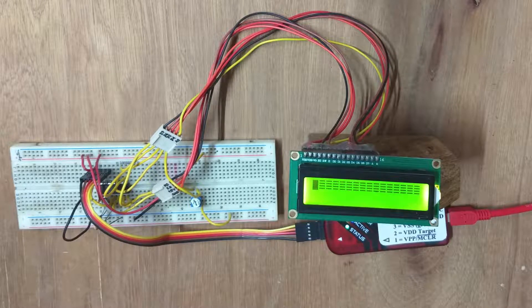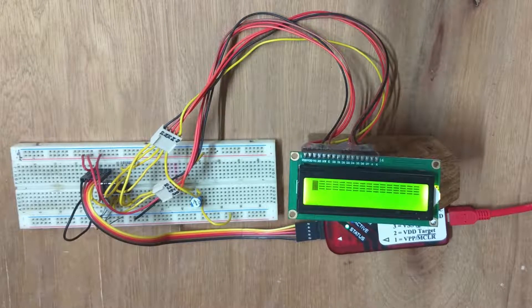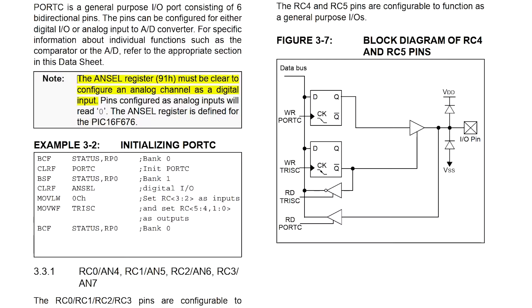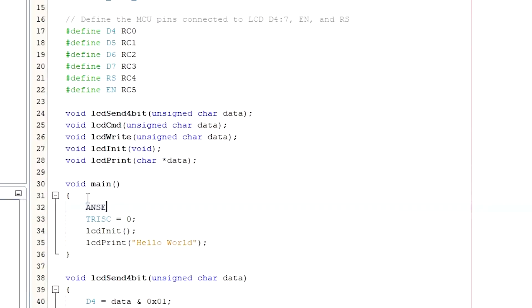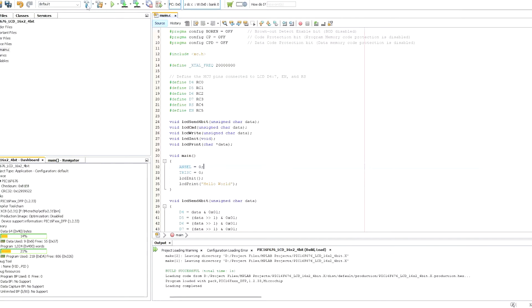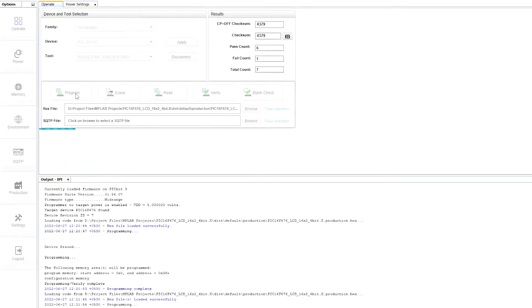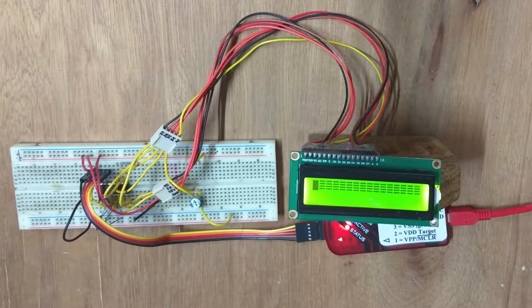Unfortunately this attempt was a failure. When I tried to find out why it didn't work, I didn't find any problem in the code, and that made it even more difficult to figure out. After two days I found the root of the problem in the datasheet for the PIC16F676 — and it was very silly. It says that to use analog input pins as digital pins, we should clear the ANSEL register first. I rebuilt the program writing ANSEL equals 0 before writing the TRIS register, reprogrammed the microcontroller, and this time it worked as expected.